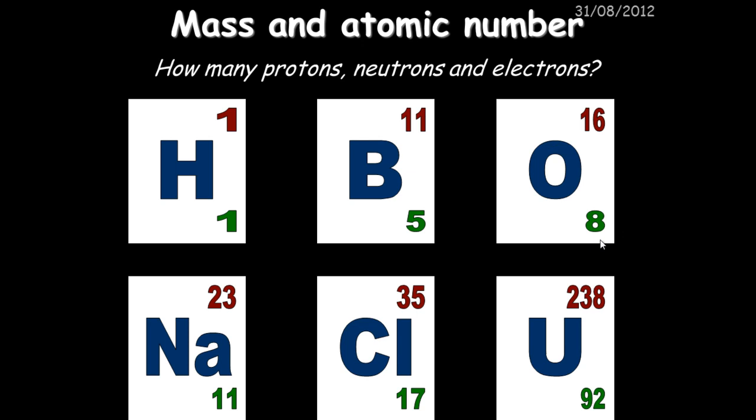Oxygen has eight protons, it also has eight electrons, and therefore it has eight neutrons because eight plus eight gives us our sixteen.